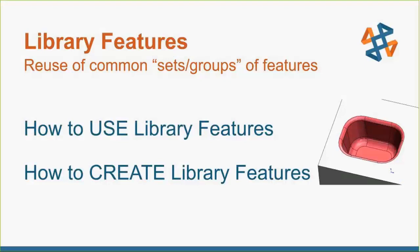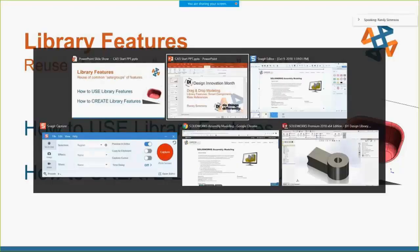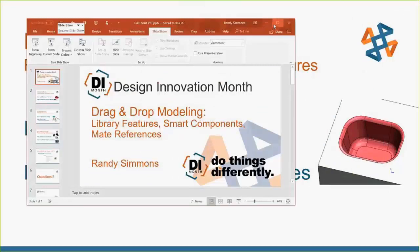The first thing we're going to talk about that can make you much faster is something called library features. This is basically the reuse of common sets or groups of features — that whole pattern you're tired of cutting over and over, or this drafted pocket I'm showing on screen that we use over and over in different parts. We're going to look at how to use library features, which is really easy — drag-and-drop — and then more importantly how to create them. Most of you have probably used them, but creating them is a little more obscure. The information is of course in the SOLIDWORKS help files, but we're going to show you how to do it here.